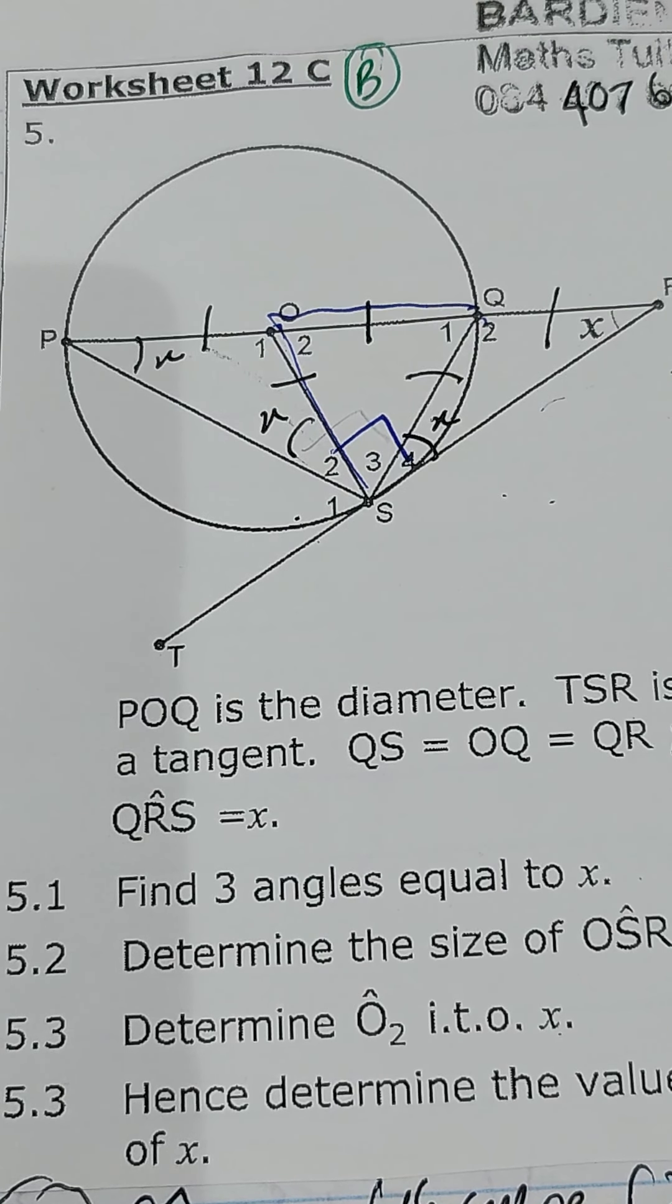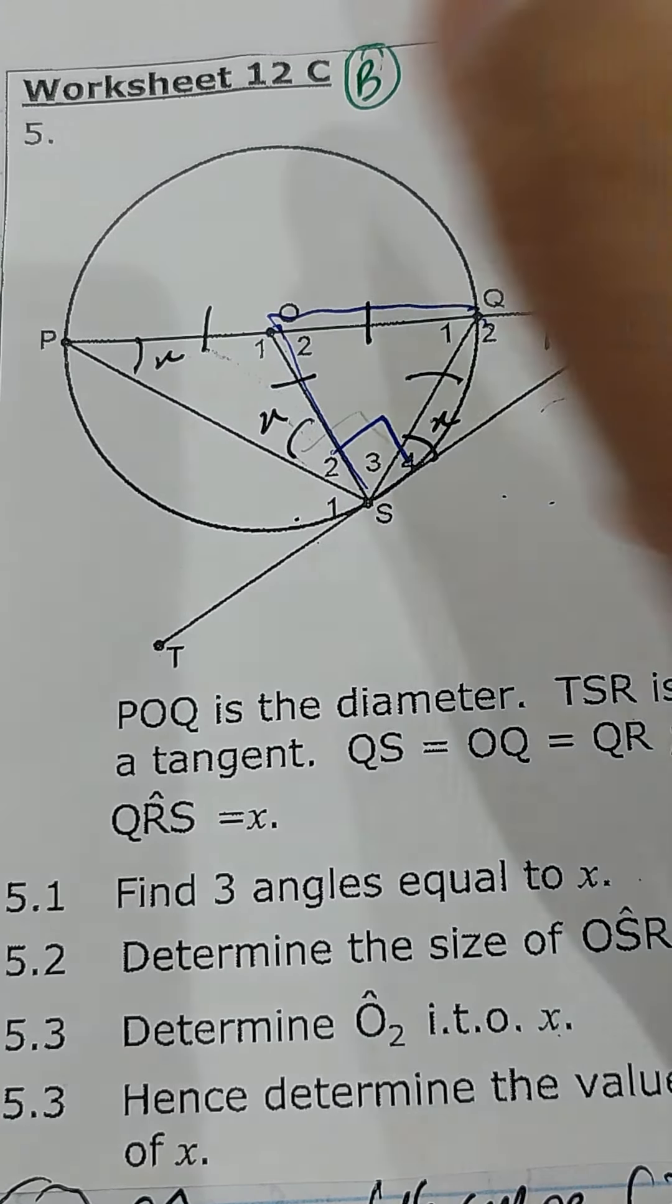Okay, now we're looking at 12C, the odd numbers, the second part of this worksheet. The question was in 5.3, determine O₂ in terms of x. We got that to be 2x. Just fill that in there. So it is 2x. The next question is 5.4.